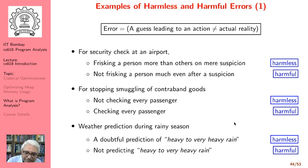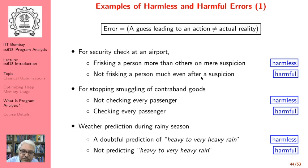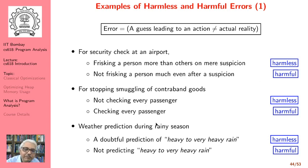Let's take some examples of harmless and harmful errors. By error we mean a guess leading to an action that does not match actual reality. For example, at a security check at the airport, frisking a person more than others on mere suspicion is harmless from the viewpoint of security. But not frisking a person at all even after suspicion is a harmful error.